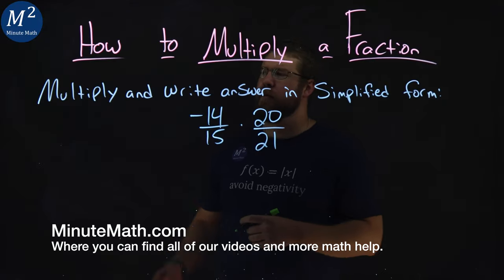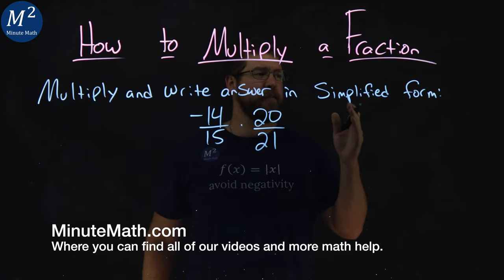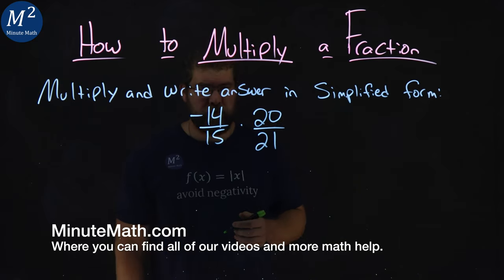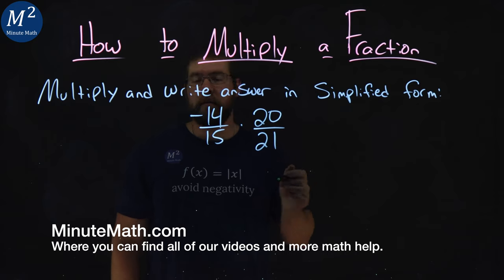We're given this problem here. Multiply and write answer in the simplified form of negative 14 over 15 times 20 over 21.